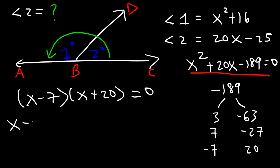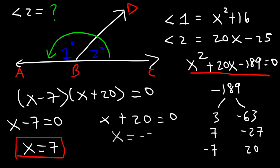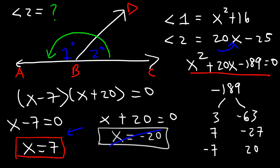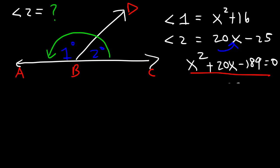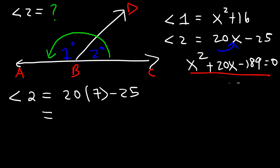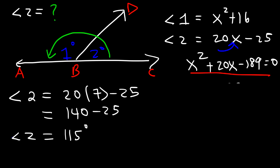Setting each factor equal to zero: if x minus 7 equals 0, then x equals 7; if x plus 27 equals 0, then x equals negative 27. We don't use negative 27 because plugging it into angle 2 gives a negative angle, which isn't practical. So x equals 7. Angle 2 equals 20 times 7 minus 25: 20 times 7 is 140, and 140 minus 25 is 115 degrees.